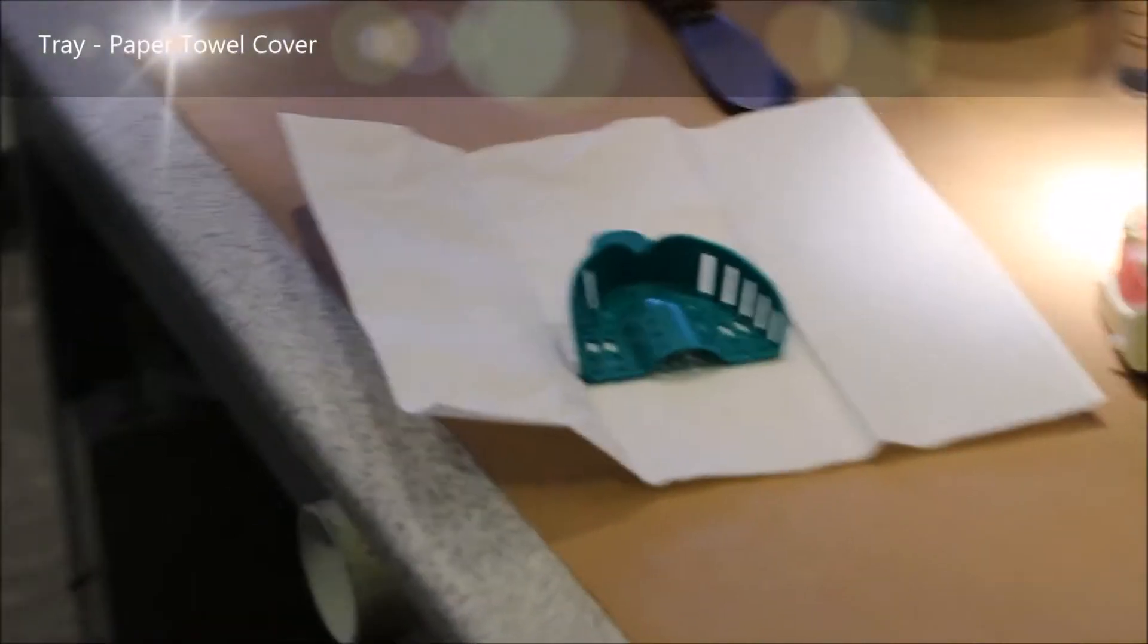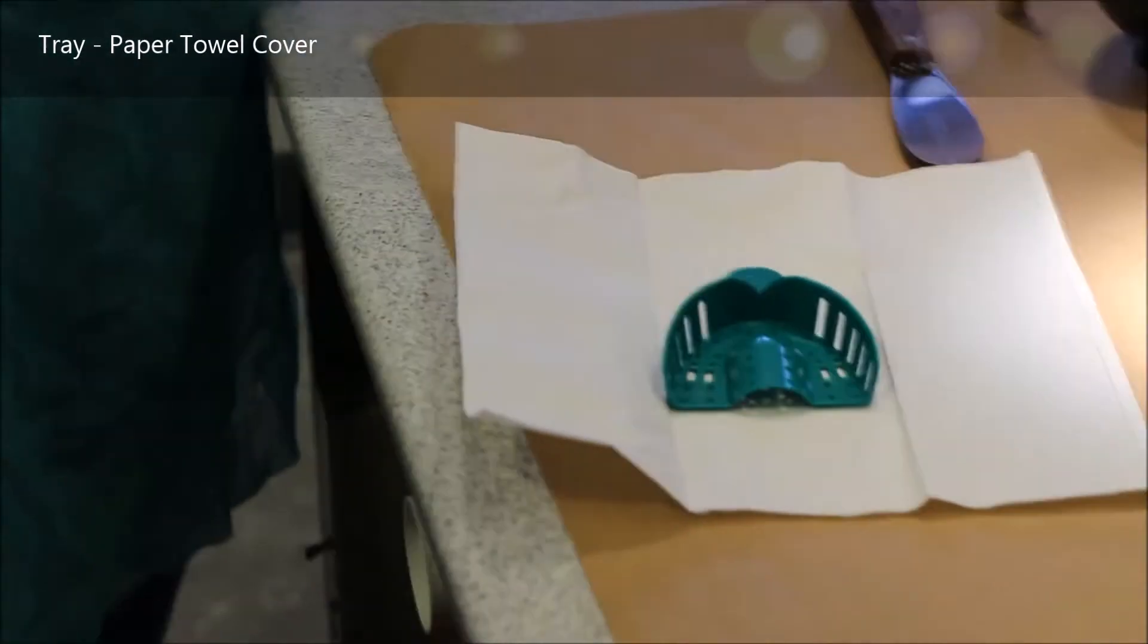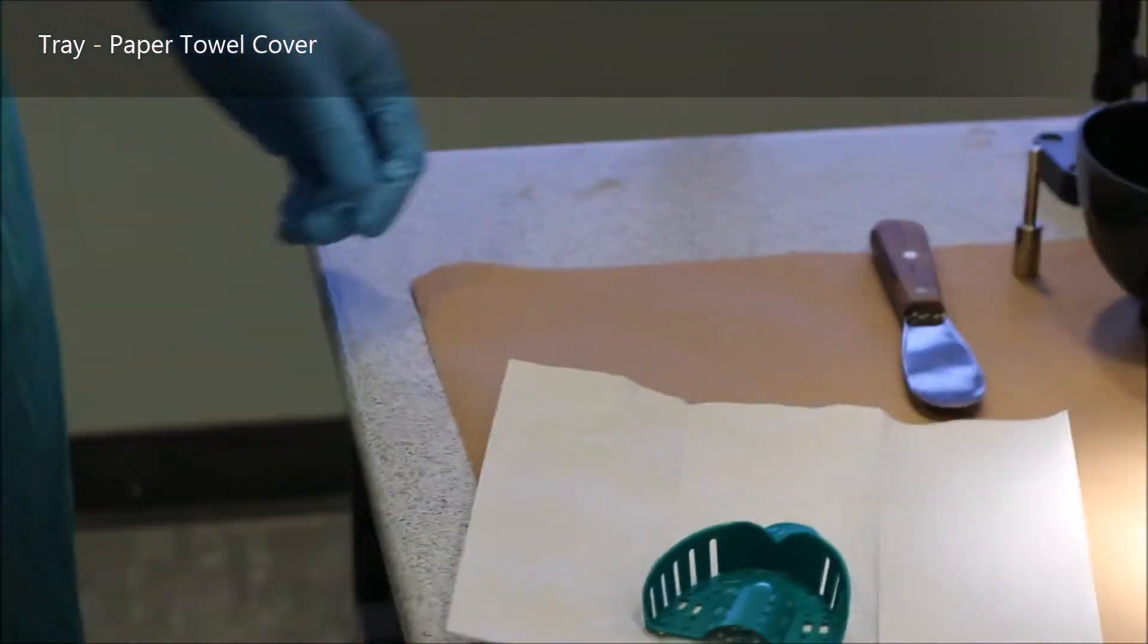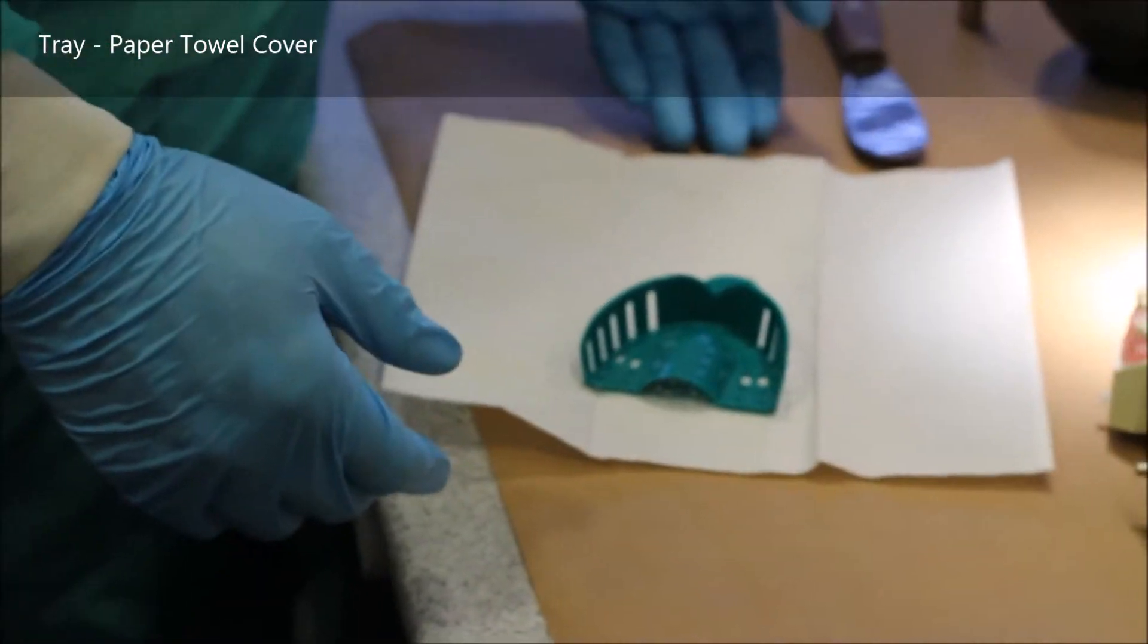In order to take an alginate impression, you will need a tray, a paper towel, some adhesive, alginate, a spatula, and a mixing bowl with pre-measured water.